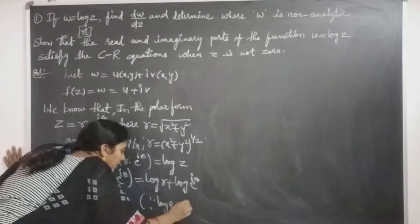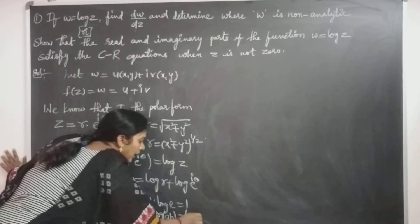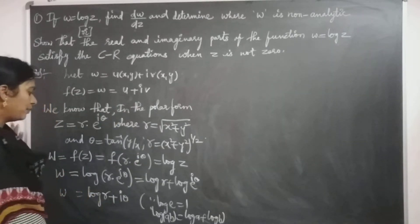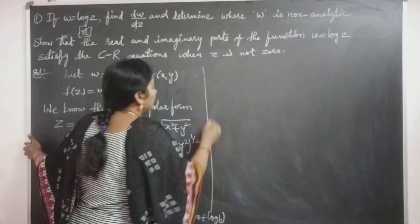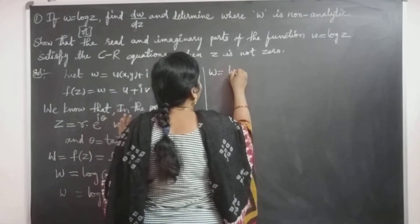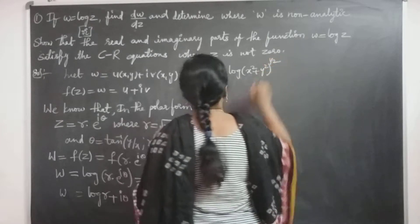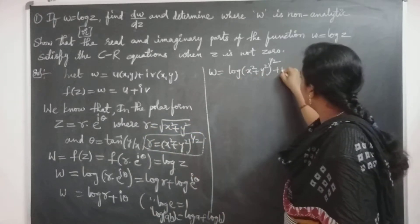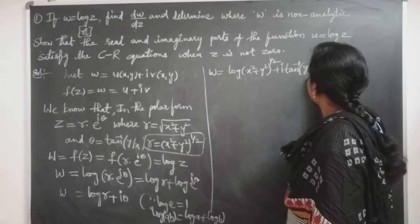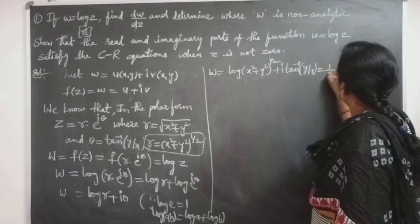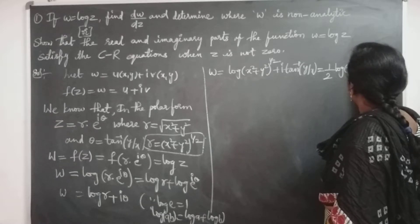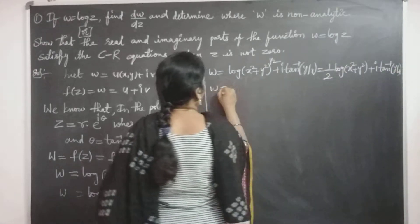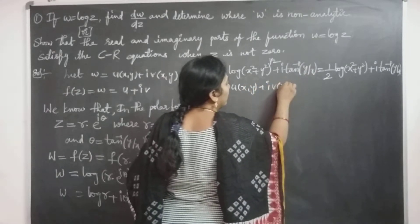Since log e equals 1 and log(AB) equals log A plus log B, we get W equal to log r plus iθ. Here, log r equals log of (X squared plus Y squared) to the power one-half, because r equals (X squared plus Y squared)^(1/2), and θ equals tan inverse of Y by X. Therefore W equals U(X,Y) plus i·V(X,Y), where U is the real part and V is the imaginary part.